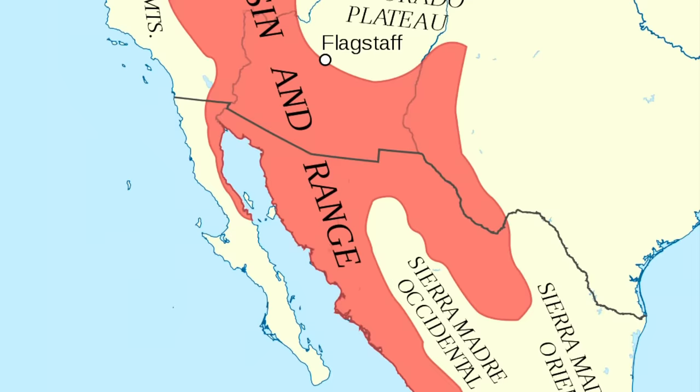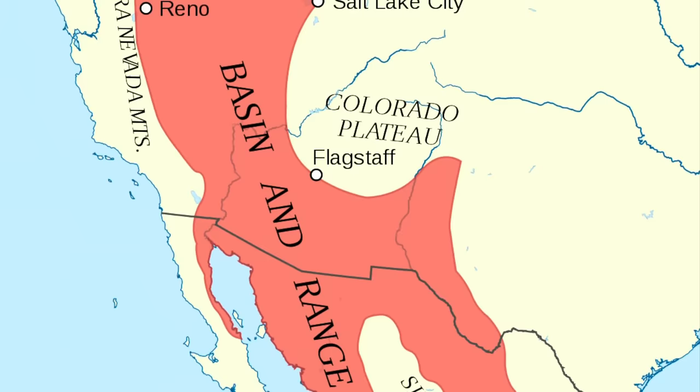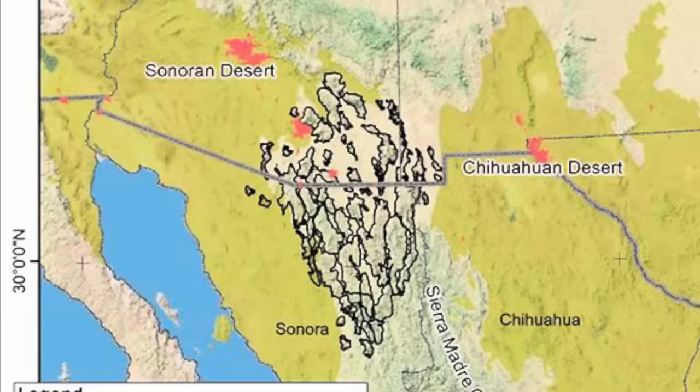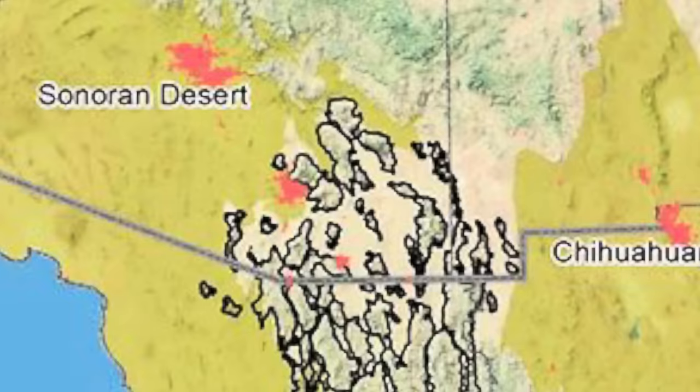They are part of the Basin and Range Province, which expands from parts of Mexico all the way up into the very northern parts of Nevada. But for the sake of this video, we're focused on this very little part of the Basin and Range called the Sierra Madre Occidental Islands, or the Madrean Sky Islands.